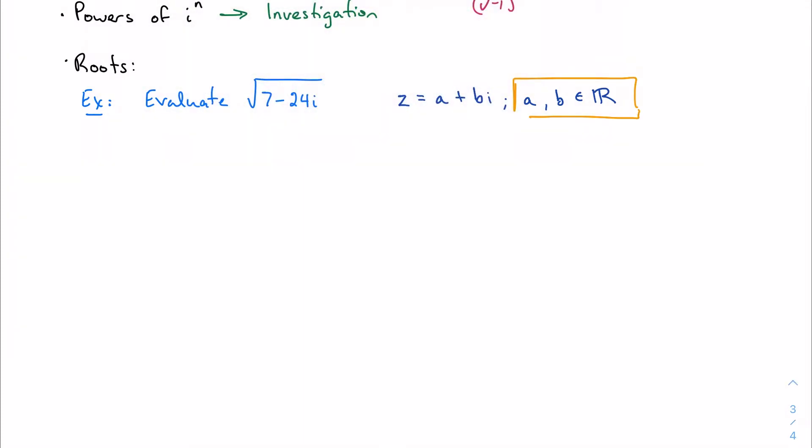So we know, or we suppose, that this whole mess here is actually going to be equal to some complex number. By simplifying this, I should get to 7 minus 24i.